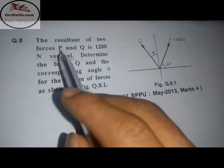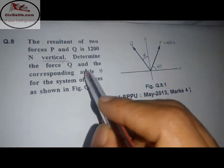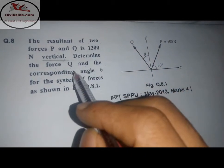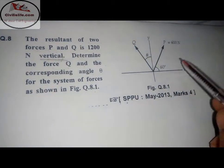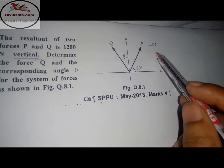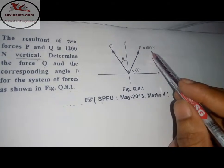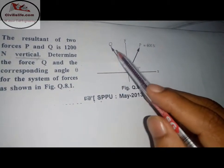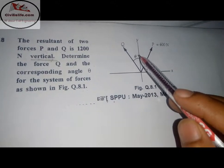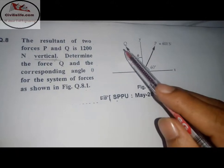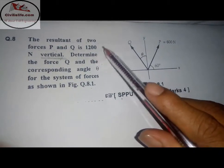The next type of problem is: the resultant of two forces P and Q is 1200 Newton vertical. Determine the force Q and corresponding angle theta for the system of forces shown in the figure. Here P is acting at 60 degrees with a magnitude of 600 Newton, and Q is acting at some angle theta with respect to the y-axis.